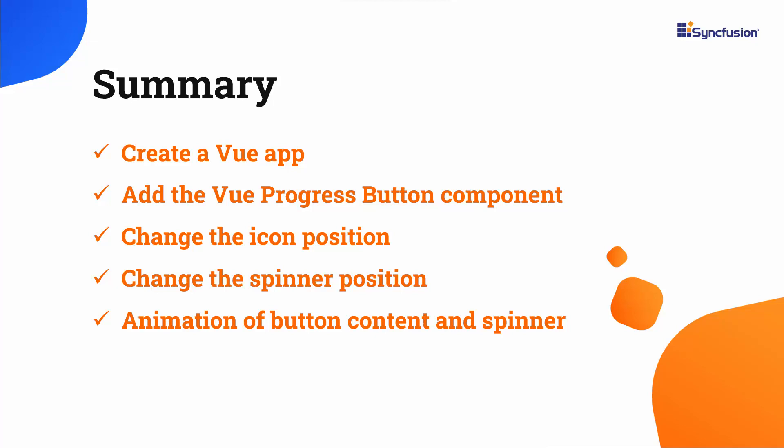In this video, I have shown you how to create a Vue project and add the Syncfusion View Progress Button component. You saw how to set icons in different spinner positions and how to add events to the progress button component. You also saw how to animate the button content and the progress button spinner. You can download a working example from the GitHub link in the description below. A link is also provided where you can check if you qualify for a free community license key. If you found this video useful, don't forget to like and subscribe. Thanks for watching.